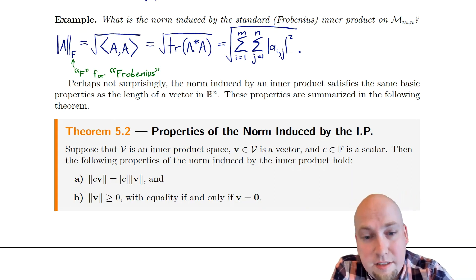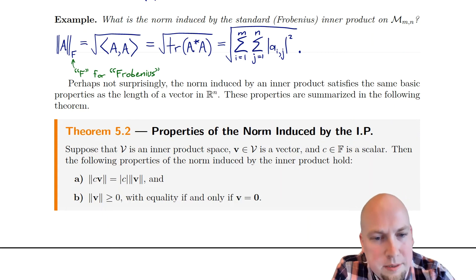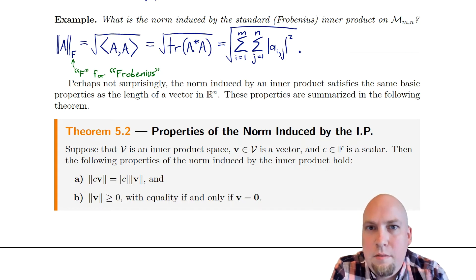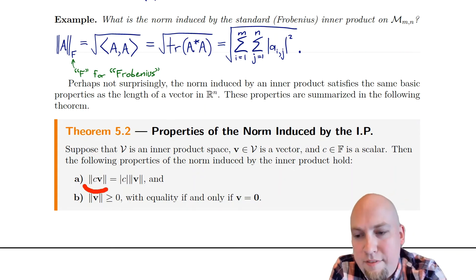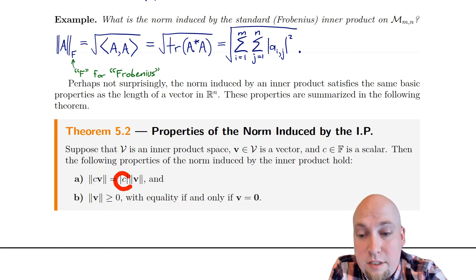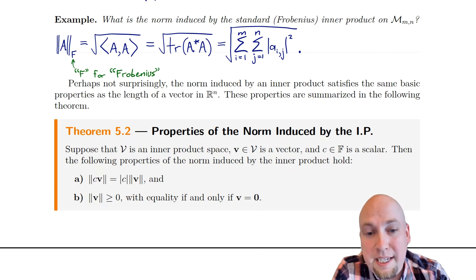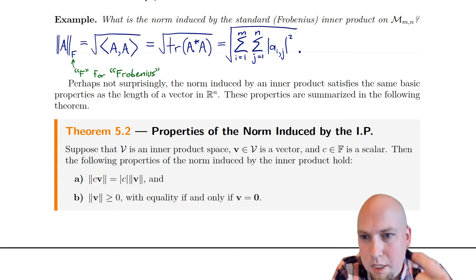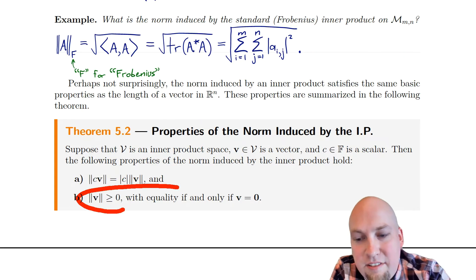Suppose you've got some inner product space with an inner product to work with, so you can talk about the norm induced by an inner product. Suppose you have some vector and some scalar. Then these properties hold. The first one: if you multiply a vector by a scalar, its length increases by a factor of whatever you multiplied it by. If you multiply a vector by seven, you increase its length by a factor of seven; by minus three, by a factor of three — the absolute value of C.